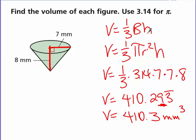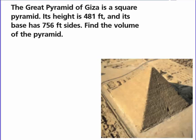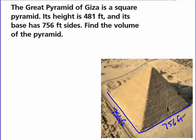Let me give you a challenge problem. The Great Pyramid of Giza is a square pyramid. Its height is 481 feet, and its base has 756-foot sides. Find the volume of the pyramid. So this distance — the base side — is 756 feet. All the way around is 756 feet. And the distance from the apex down to the center of that base is 481 feet. Pause the video and find the volume.